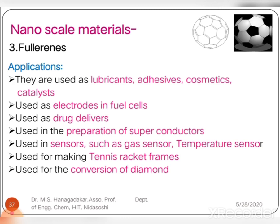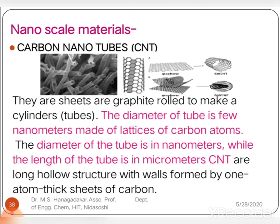The applications of fullerenes include their use in making lubricants, adhesives, cosmetics, and catalysts. They can be used to make electrodes in fuel cells and are used in drug delivery systems. They are also used for the preparation of superconductors, sensors like gas sensors or temperature sensors, for making tennis racket frames, and for the conversion of diamond.